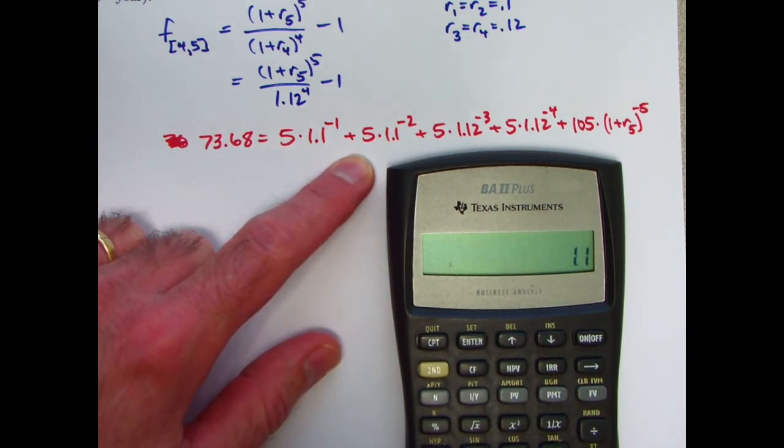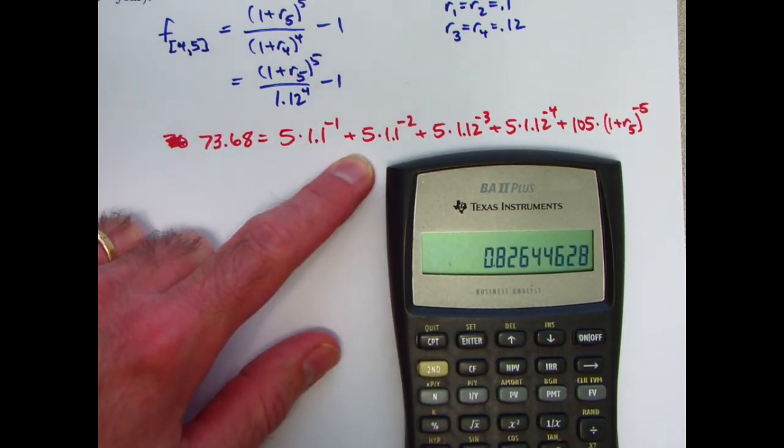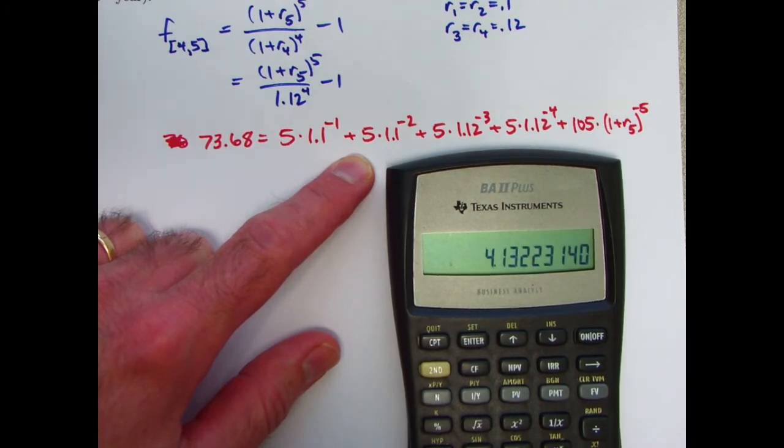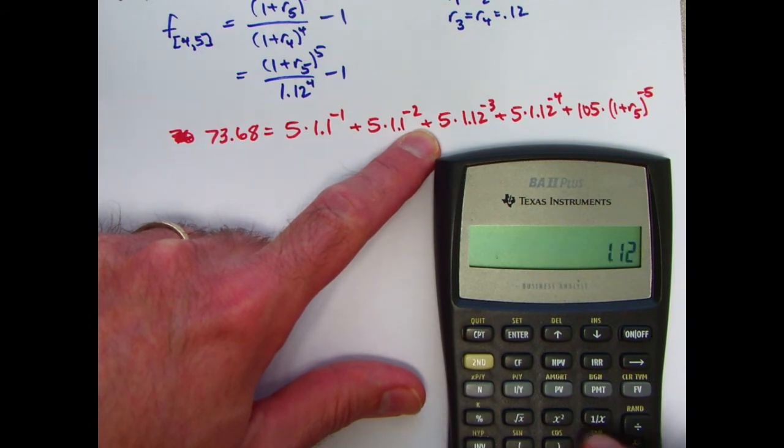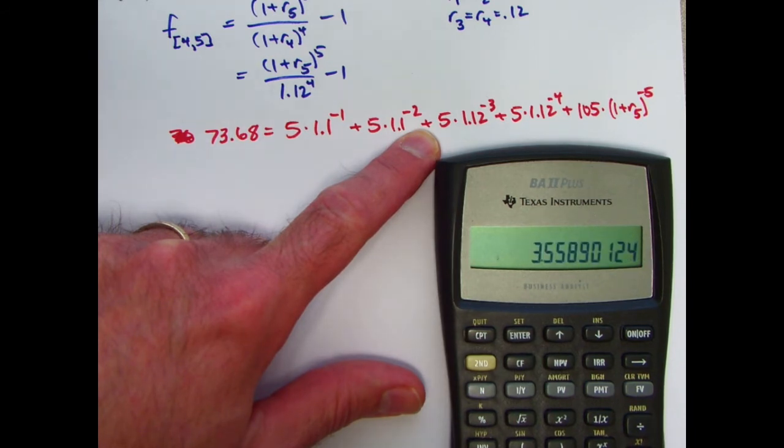1.1 to the negative 2 power is this times 5. Store that in register 2. 1.12 to the negative 3 power is this times 5. Store that in register 3.